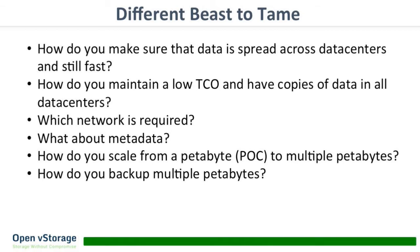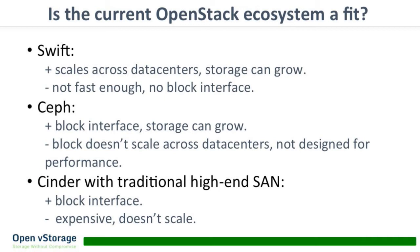They also didn't want to go with a multi-petabyte setup from day one — they wanted to start small and grow, so we had to scale from a couple of terabytes to really multi-petabytes. The first thing we did was look at what we could do with OpenStack. We looked at Swift because it's capable of working across different sites and the storage can grow, but the problem is it's not fast enough and doesn't have a block storage interface, so you can't run virtual machines on top of it.